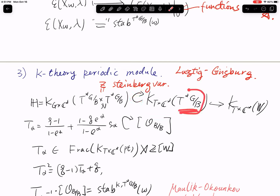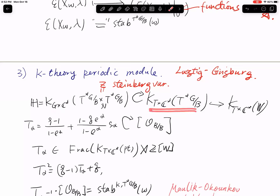You can look at the T-fixed points of the cotangent bundle of the flag variety, which are bijective to the Weyl group. So you can go back to the K-theory of the T-fixed points — this is called the restriction. Inside the affine Hecke algebra, there is a special element called the Demazure-T operator for K-theory, usually denoted T_α where α is a simple root. The presentation of this operator is written as a fraction involving 1 + s_α, where s_α is the Weyl group action.